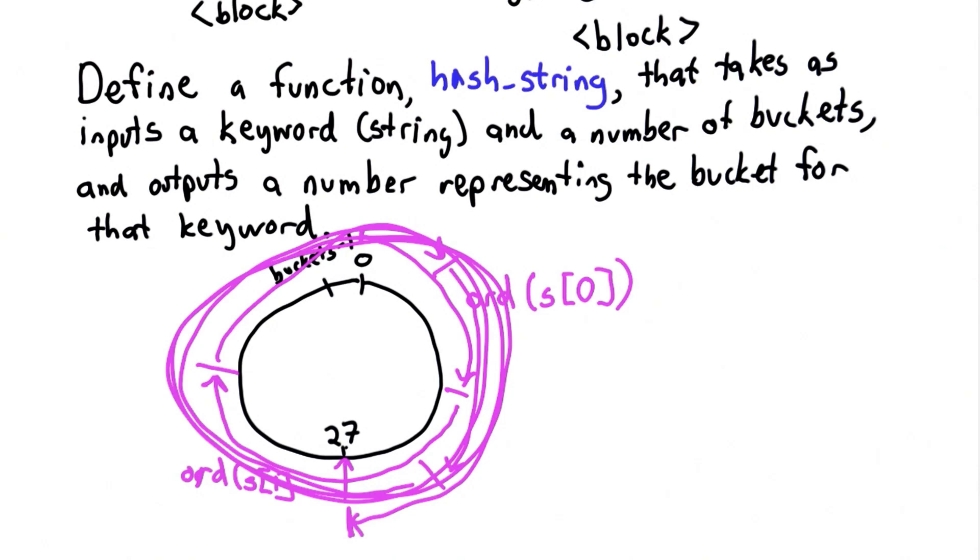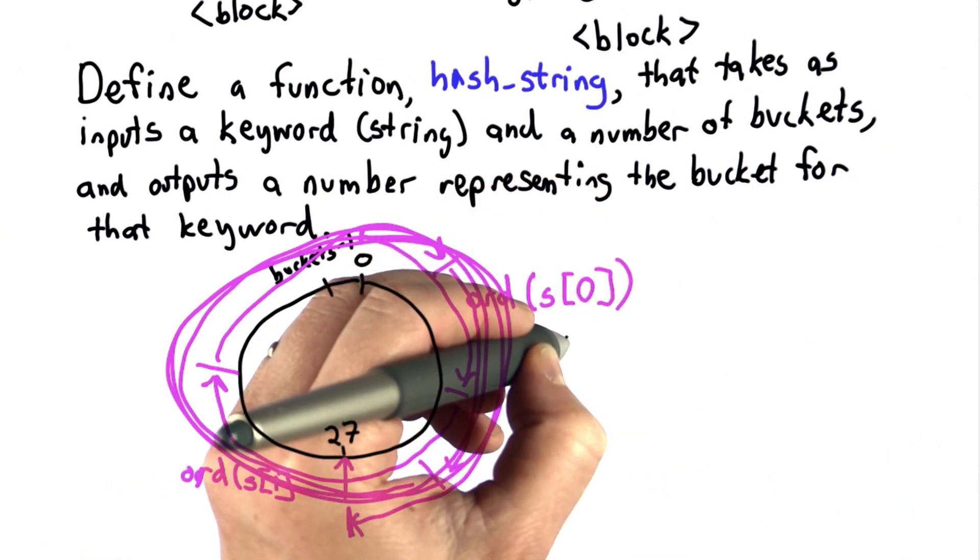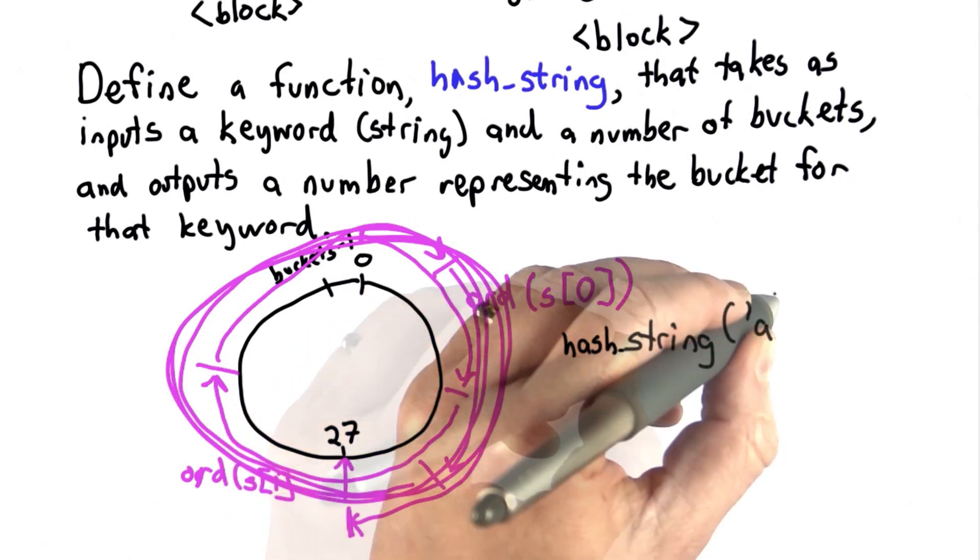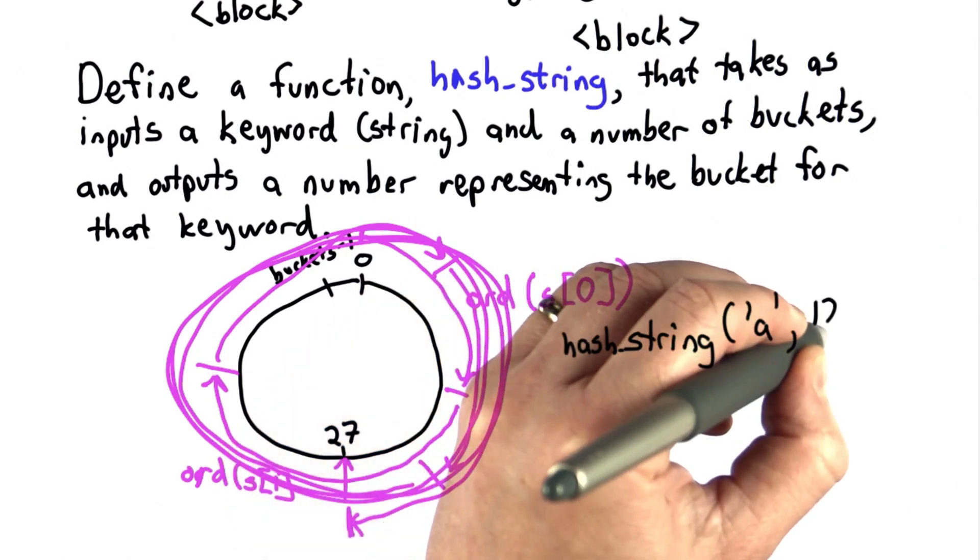I'll give you a couple of examples so you know if you're implementing it the right way. Let's suppose we have as our string the single letter A, and we have 12 buckets.